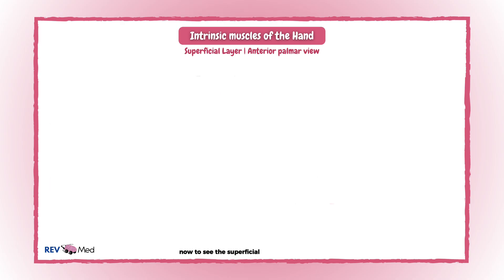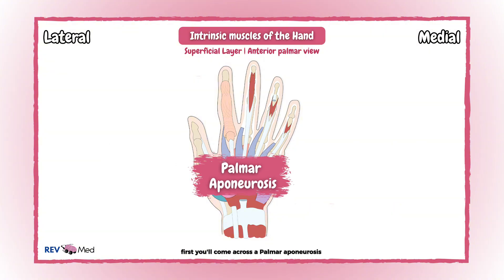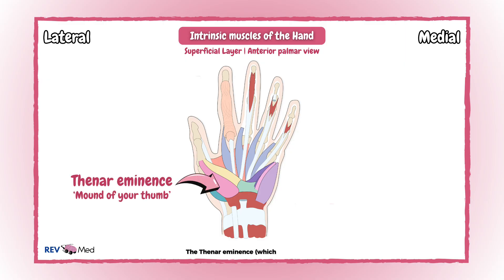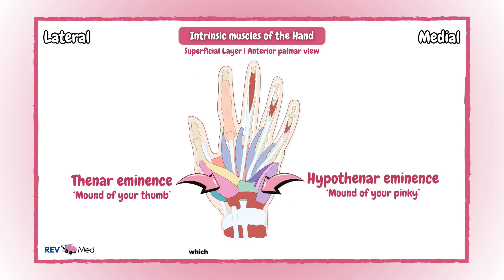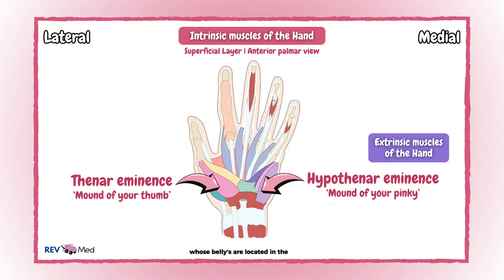To see the superficial muscles of the hand, we'll use our model hand. First, you'll come across a palmar aponeurosis, which is the thick fascia that covers and protects all the underlying muscles, nerves, and vessels. Once you remove this, we'll go over to the first layer: the thenar eminence, which is the mound of your thumb, and the hypothenar eminence, which is the mound of your pinky. We're talking about the intrinsic muscles of the hand in this lesson, but we also have some labeling of the extrinsic muscles whose bellies are located in the forearm but whose tendons extend into the hand.